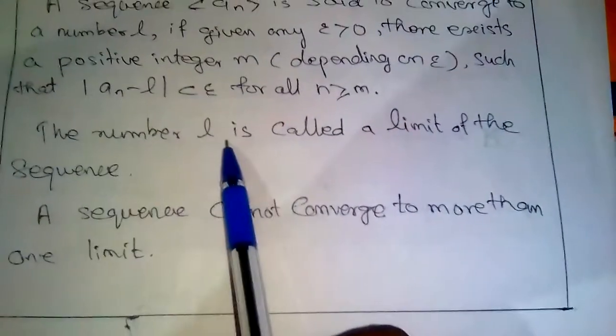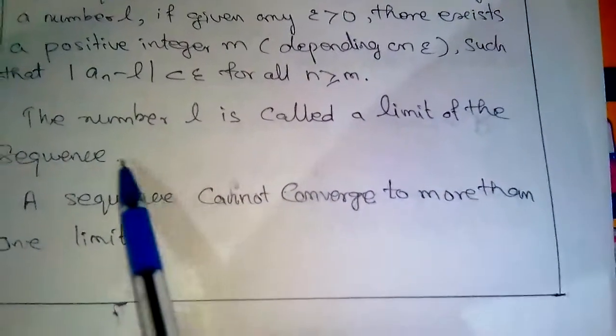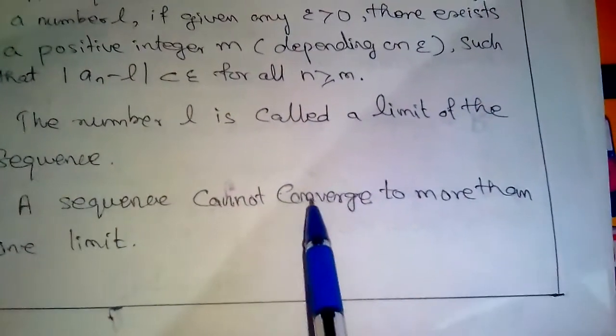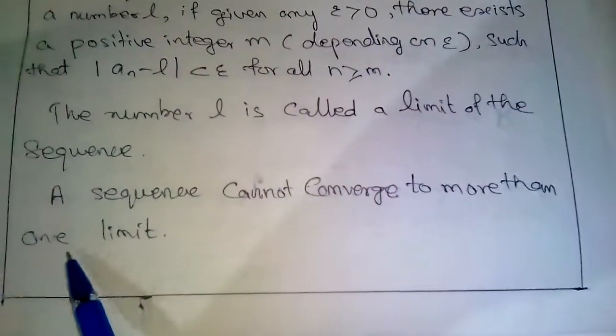The number L is called the limit of the sequence. A sequence cannot converge to more than one limit.